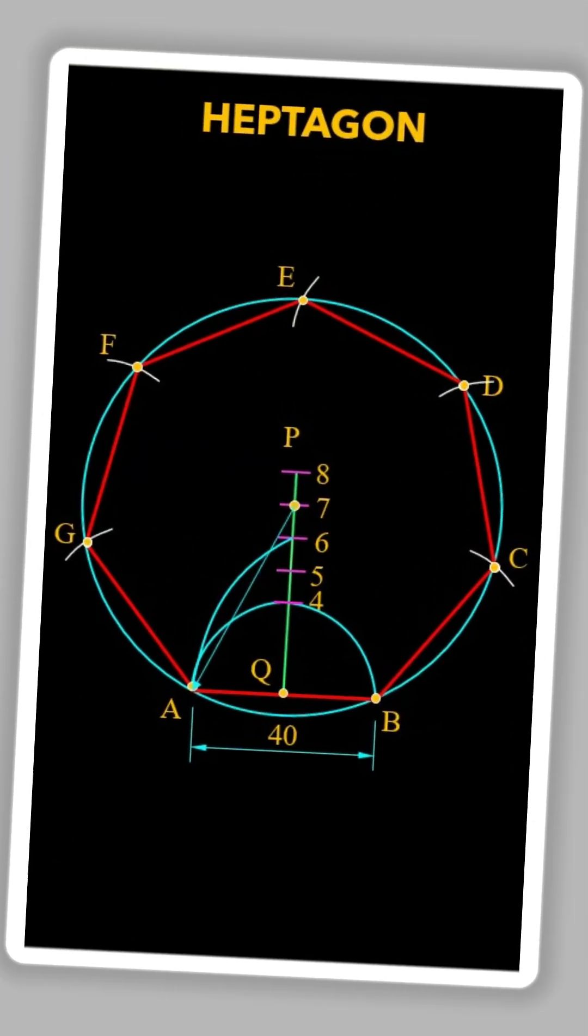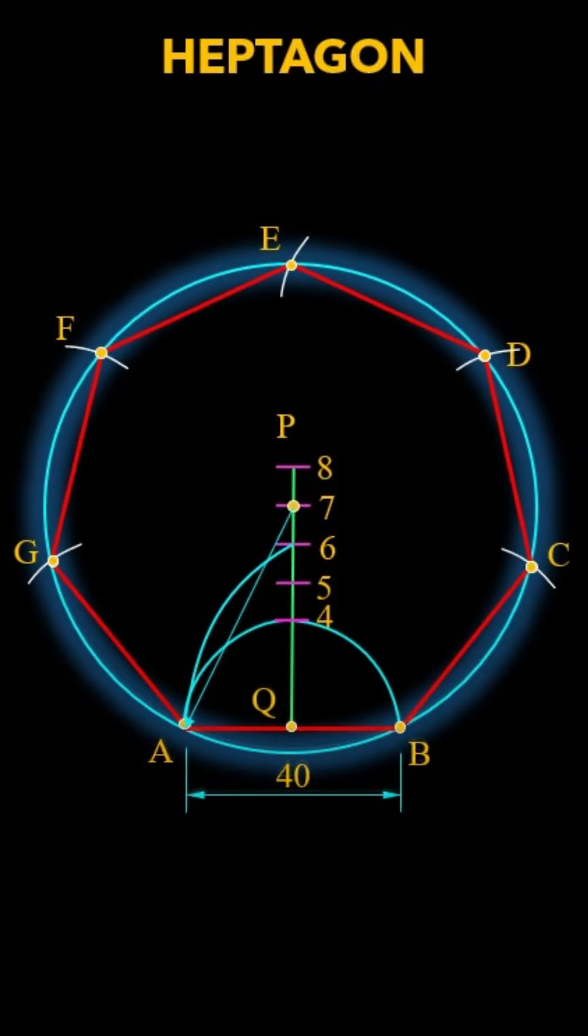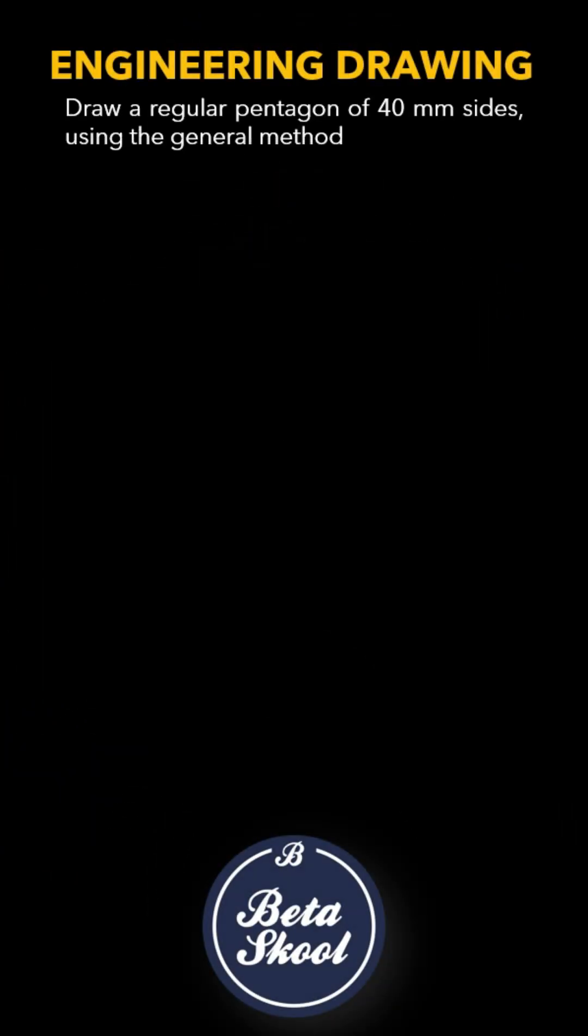Hello and welcome back to another learning video in Engineering Drawing. In this video, we will learn how to construct a regular heptagon using the general method. Let's get started. The question reads: Draw a regular heptagon of 40mm sides using the general method, General Method 2.